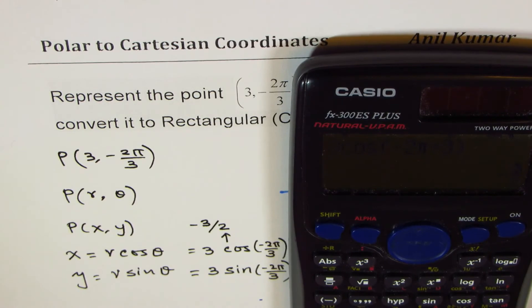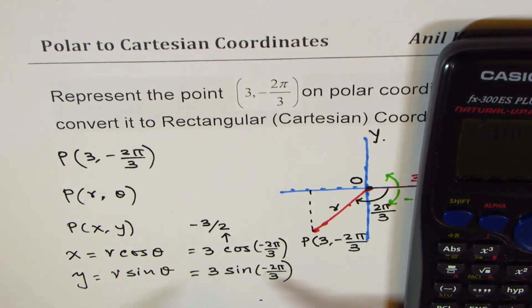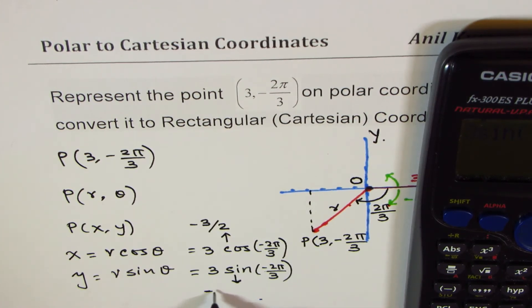For Y value, you get 3 times sin(-2π/3) equals -3√3/2. This value you get is -3√3/2.